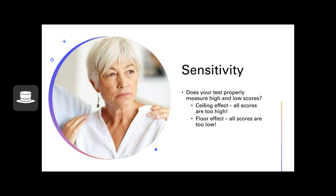A test where all the scores are too high is referred to as the ceiling effect — you can think of all the scores being at the ceiling. The floor effect is the opposite: all the scores are too low. When all the scores are too high, that is the ceiling effect; when all the scores are too low, that is the floor effect.